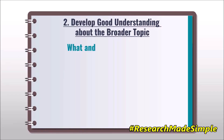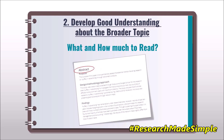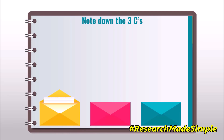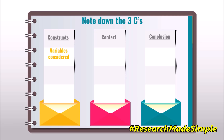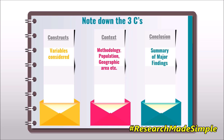The next question is what and how much to read. I would suggest initially reading at least the abstract part of the relevant research papers and keeping note of three C's: construct, context, and conclusion. Constructs means the variables considered for that specific research study. Context means the methodology, population, or geographic areas considered. And conclusion means the major findings of that specific research study.